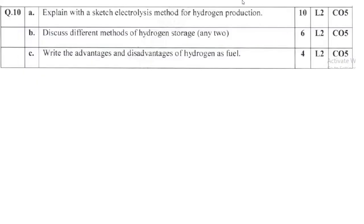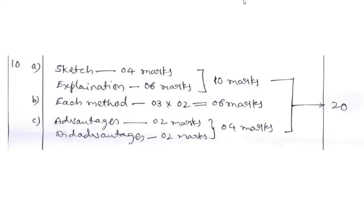Question 10A: explain with neat sketch electrolysis method for hydrogen production. This topic is related to hydrogen production methods. Electrolysis is one method. What about ionic reaction, cathodic reaction, why electrolysis is required? Discuss different methods of hydrogen storage, any two methods. Write advantages and disadvantages of hydrogen as fuel. 2 plus 2, weightage 4 marks, very easy.